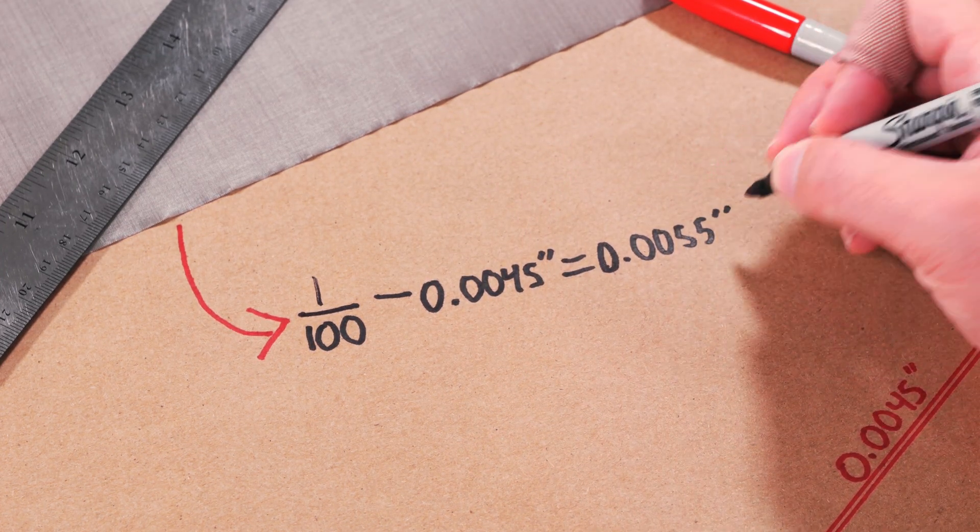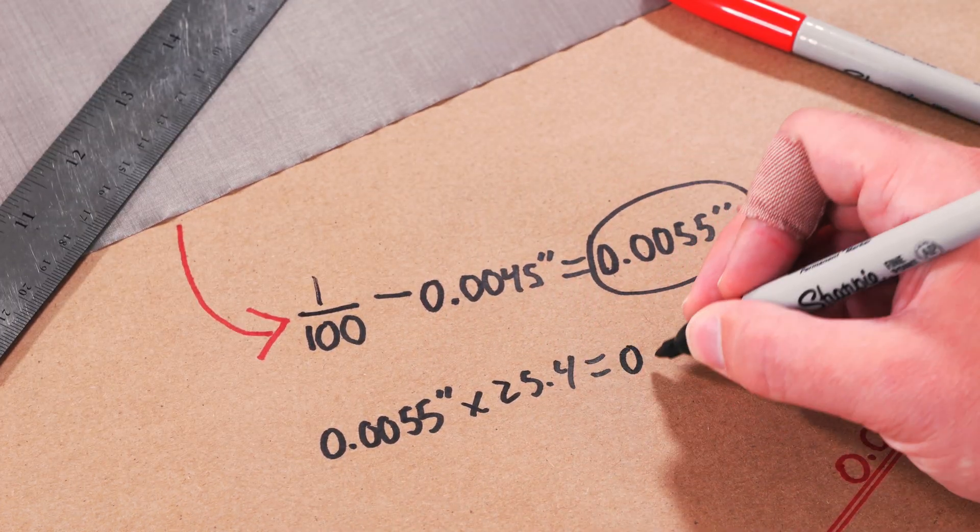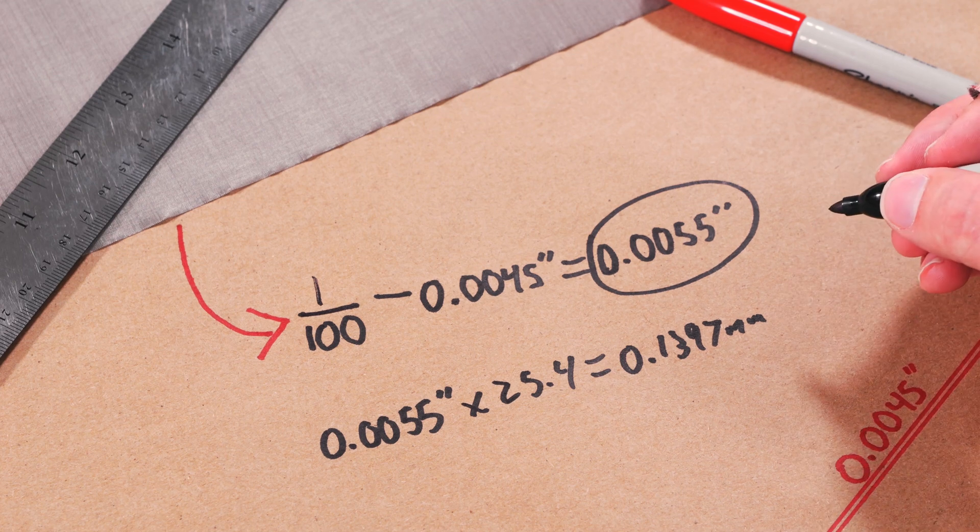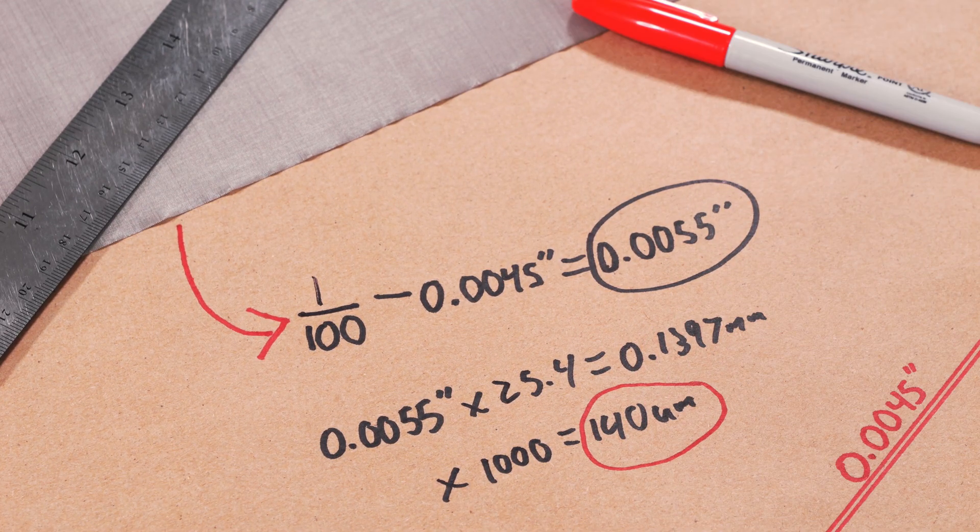And if we just multiply that by 25.4 to get that in millimeters, to get 0.1397 millimeters, multiply that by a thousand, and that's basically 140 microns, if we round up just a little bit.